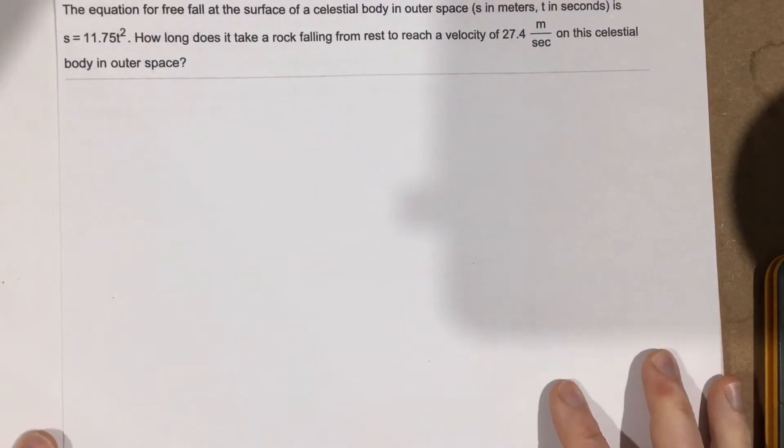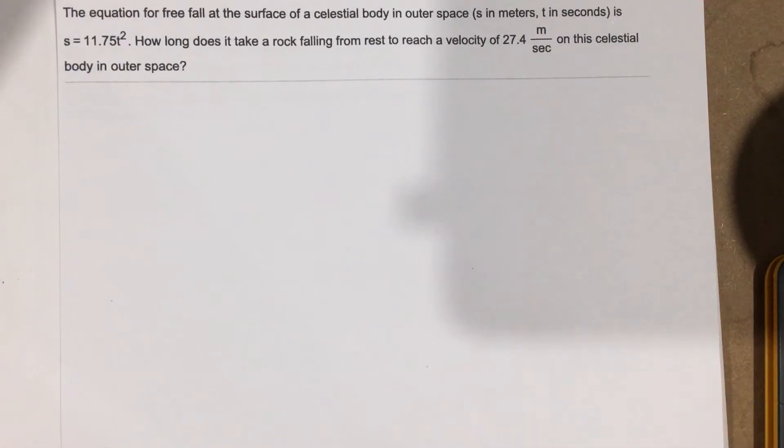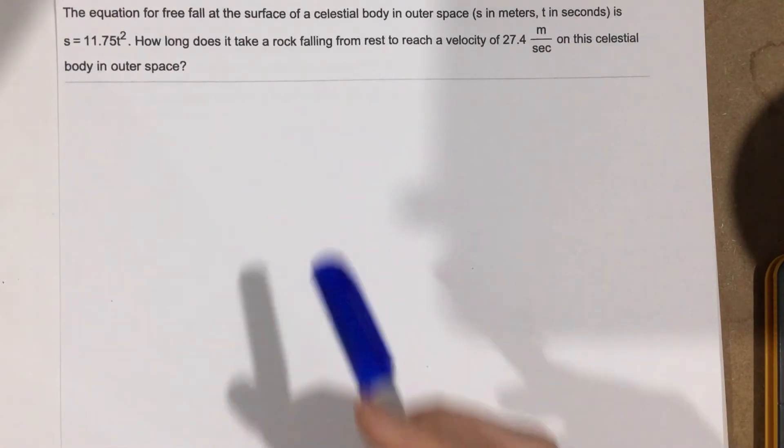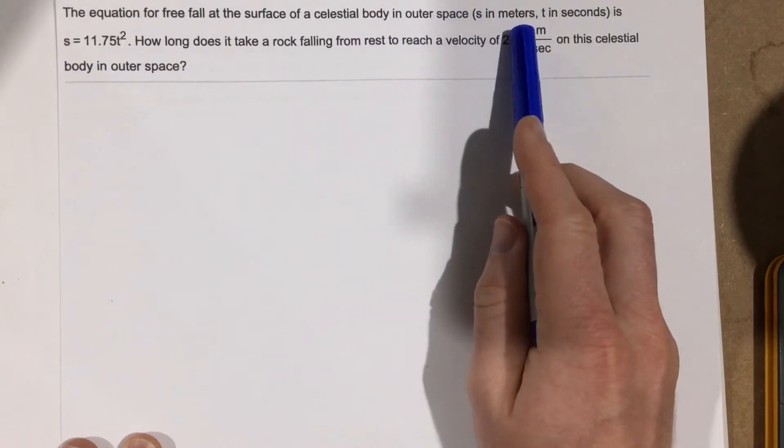This is problem number three from section 3.4. This problem says the equation for free fall at the surface of a celestial body in outer space, s in meters, t in seconds